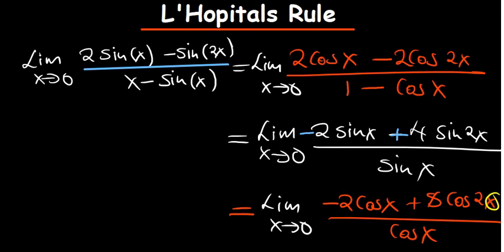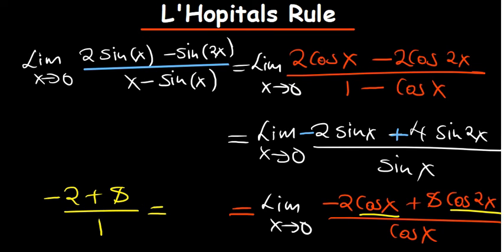At this point, substituting zero on the bottom: cosine of zero is one, so it's no longer indeterminate. Plugging in zero everywhere: on top, negative cosine of zero is negative one, and eight cosine of zero is eight, giving negative one plus eight equals six. On the bottom, cosine of zero is one. So the answer is six over one, which is six.